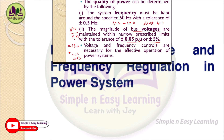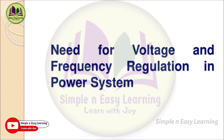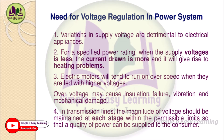There are several needs for voltage regulation in a power system. First, variations in supply voltage are detrimental to electrical appliances — for example, switching operations can cause overvoltage at a particular instant, which is harmful. Second, for a specified power rating, when supply voltage is less, the current drawn is more, giving rise to a heating problem — because voltage is inversely proportional to current at constant power.